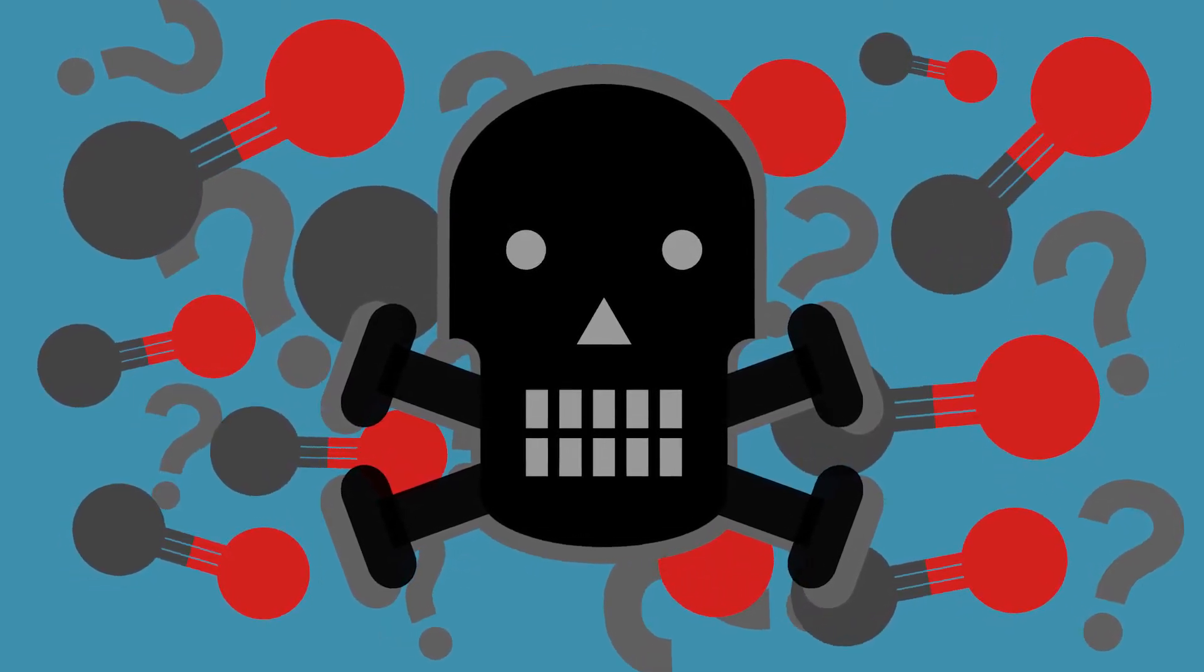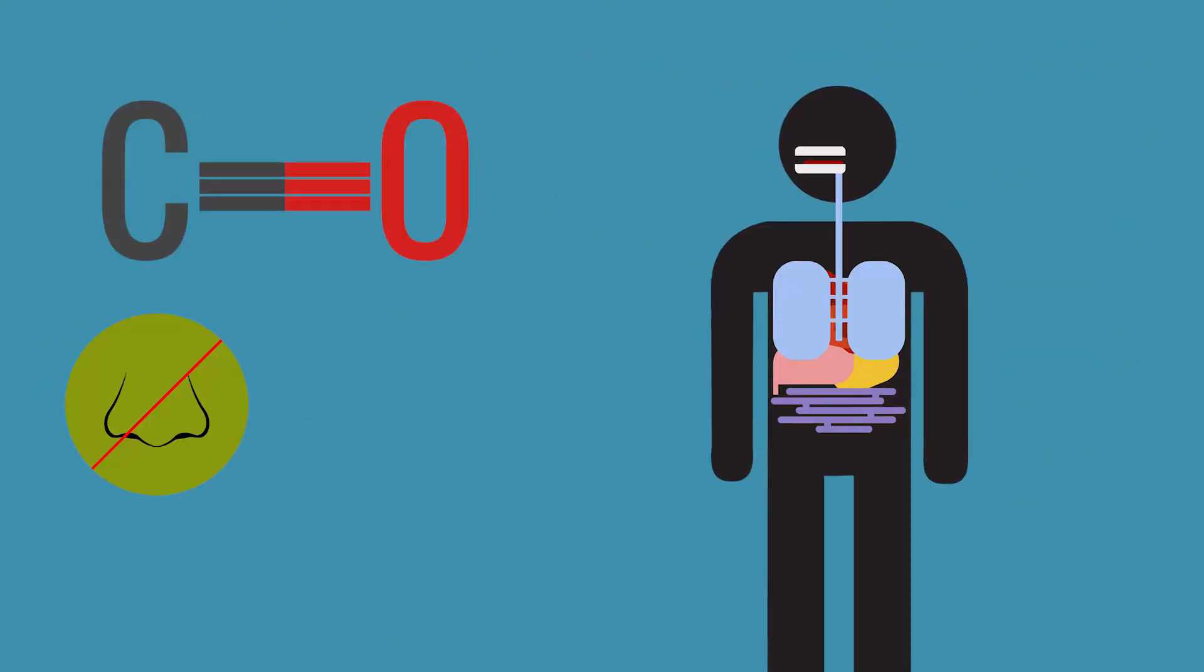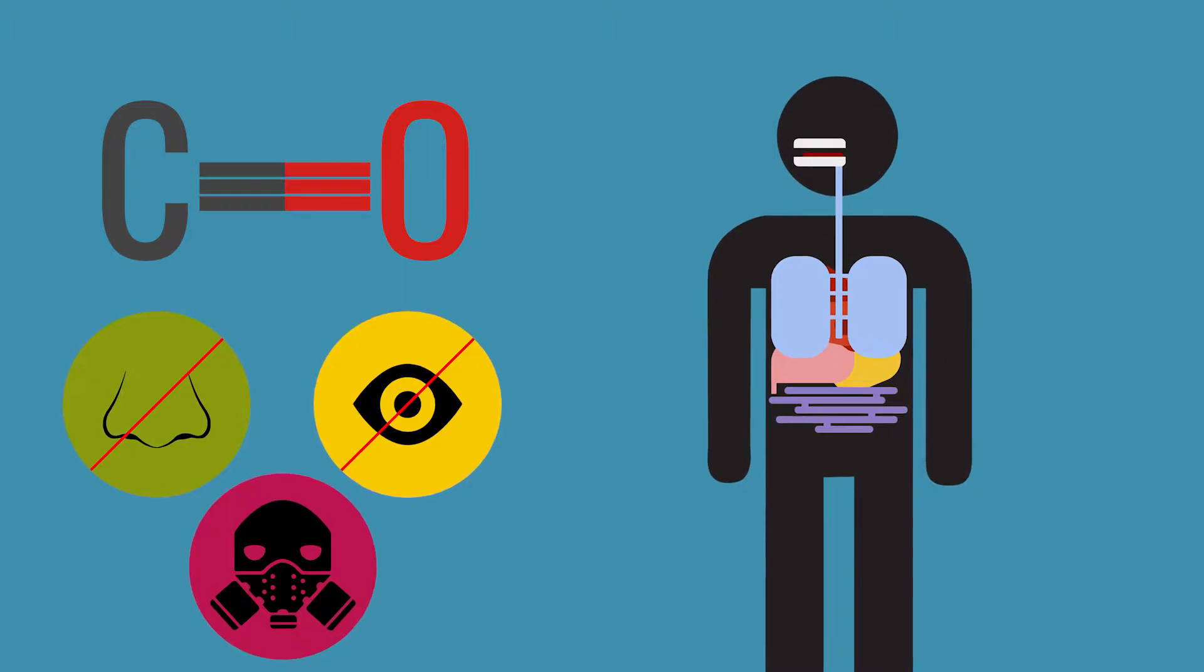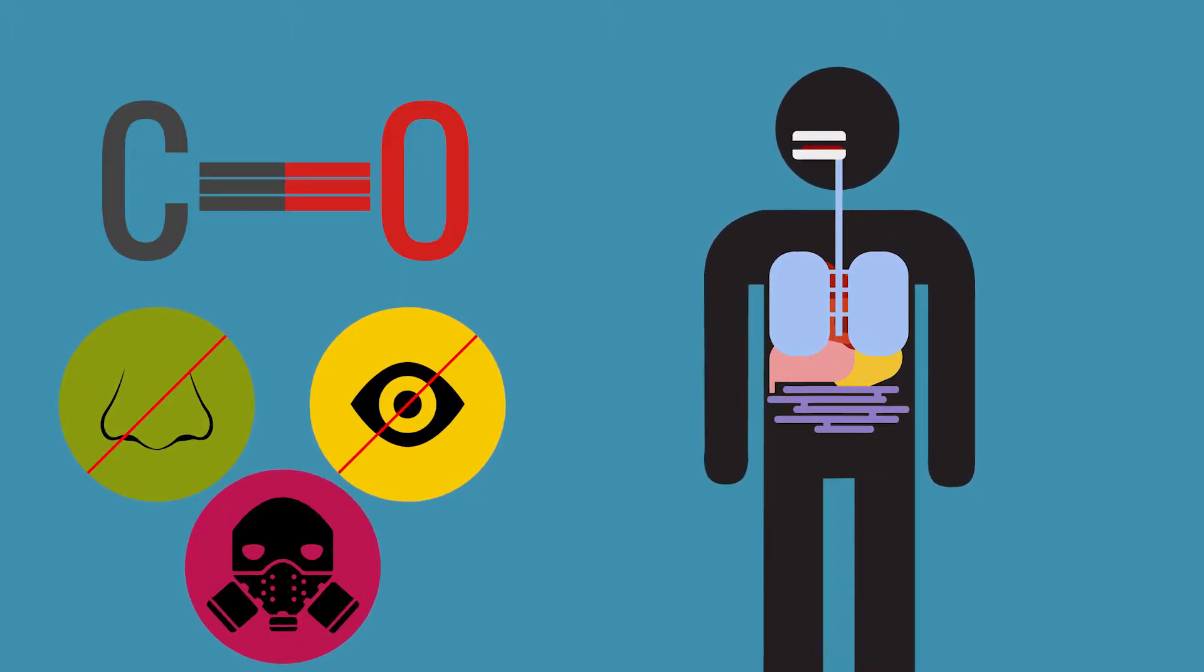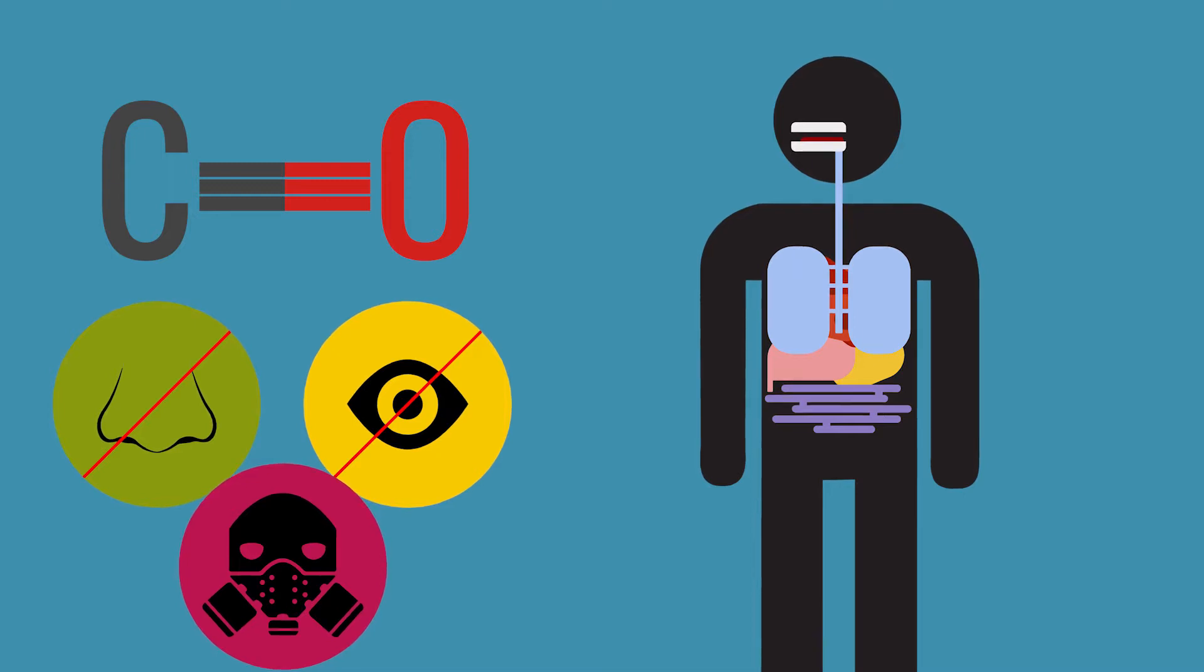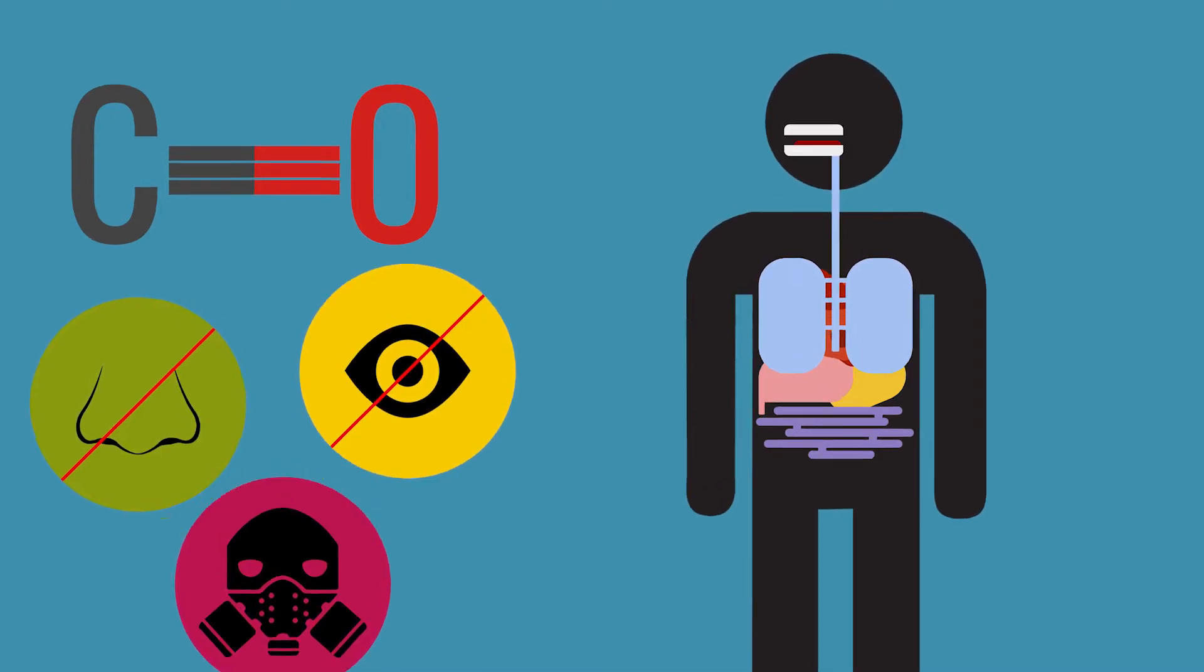What makes carbon monoxide so dangerous? CO is an odorless, colorless gas that is toxic to humans because it combines with the oxygen-transporting protein in our blood, rendering our bodies unable to deliver oxygen to our vital organs.